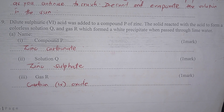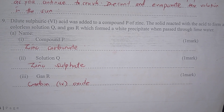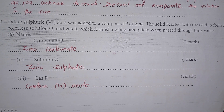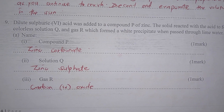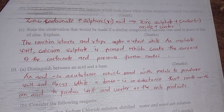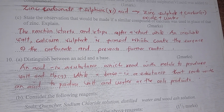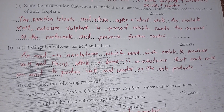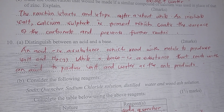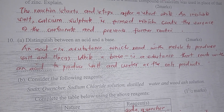Sulfuric acid was added to a compound of zinc, and the solid reacted with the acid to form a colorless solution Q and a gas R, which formed a white precipitate when passed through lime water. Compound P is zinc carbonate. Solution Q is zinc sulfate. The word equation: zinc carbonate + sulfuric acid → zinc sulfate + carbon dioxide + water. If a similar compound of calcium were used, the reaction starts and then stops after a short time because of the formation of an insoluble coating of calcium sulfate that prevents further reaction.